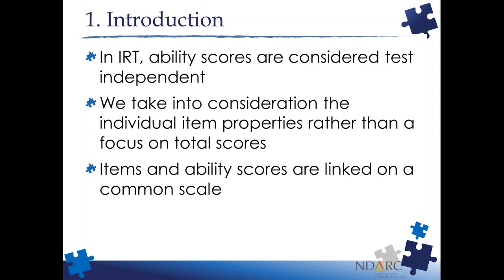In IRT, we have a different assumption. We state that all individuals have a pre-existing ability level, and it's the test item's job to try and figure out or make a best guess at what this true ability level is. Because we make this assumption, there's a separation between the person's true ability level and the specific items - they're separate. We say that IRT considers ability scores to be test independent. That separation of ability scores and test items enables us to develop highly efficient instruments.